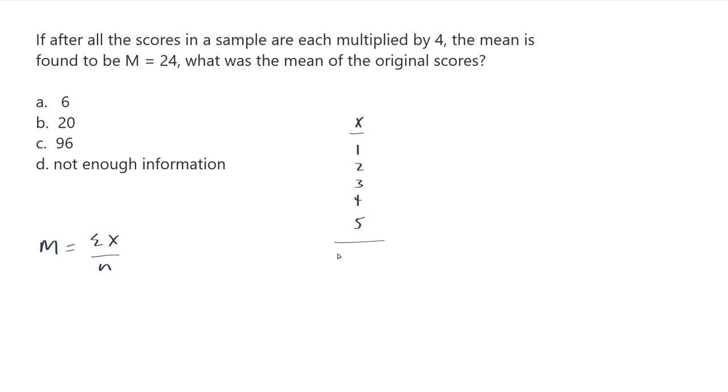So my sample mean is the sum of x over n. So I need to have my sum of x. And the sum of x for this set of scores, if you add these up, you get 15. I have 5 scores and so my mean is going to be 15 over 5. The mean will be 3.